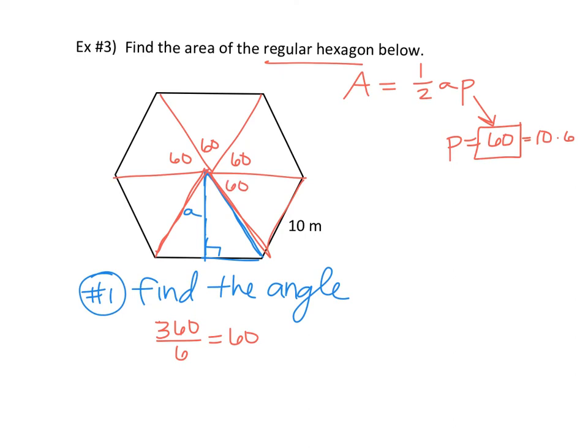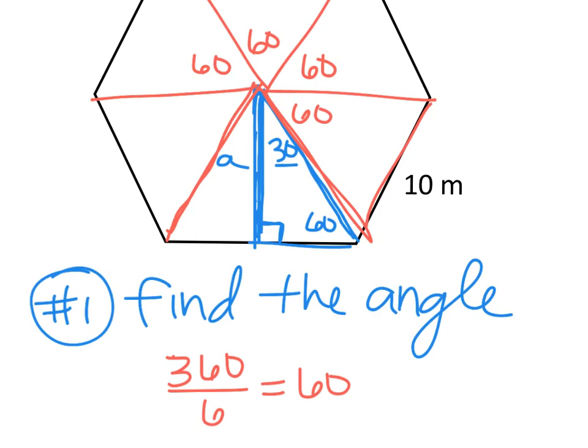So this is 60 and this is 60 and this is 60 all the way around. We drew in this line, which does what to our 60? Cuts it in half. So that means this angle is actually 30. And if this is 30 and this is 90, what's that bottom angle? 60. So we have a 30, 60, 90. Do you know any of the sides of that 30, 60, 90? Which one? The bottom. What is this bottom side? It's five. It's half the side of the figure. If the whole side is 10, then this one's five.